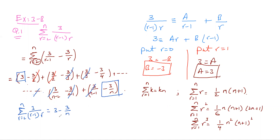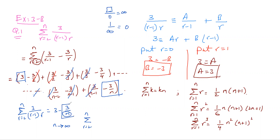Now there's one more thing asked: what if n tends to infinity, what would this sum be? Anything over infinity is zero, so 1/infinity equals zero. So when n tends to infinity, 3/n tends to zero. Therefore the sum of 3/((r-1)·r) as n tends to infinity converges to the value 3.